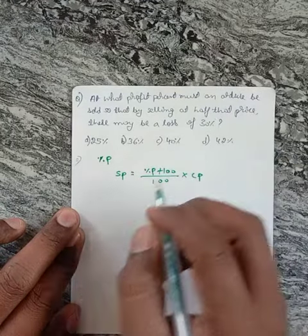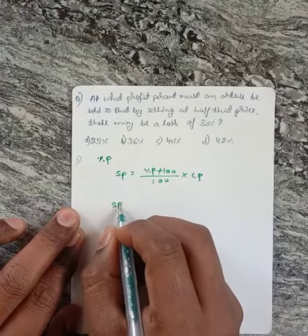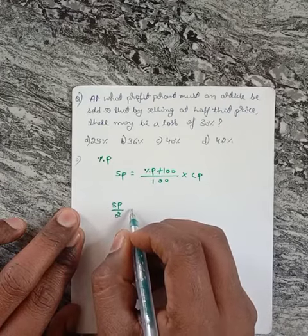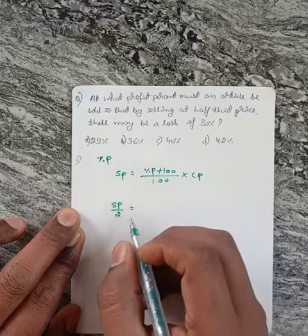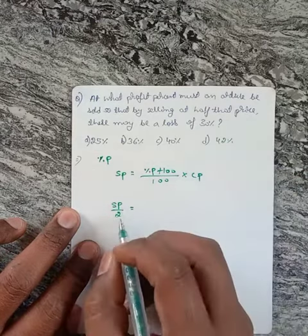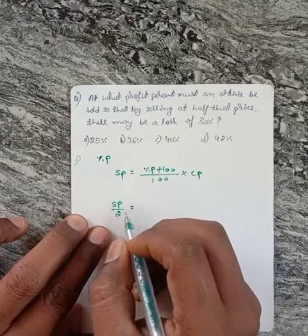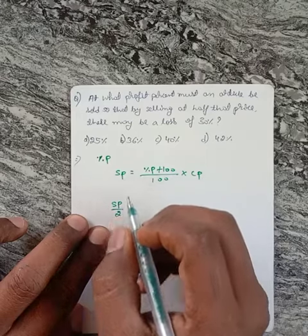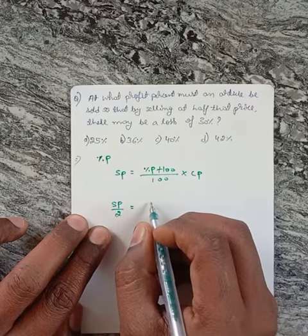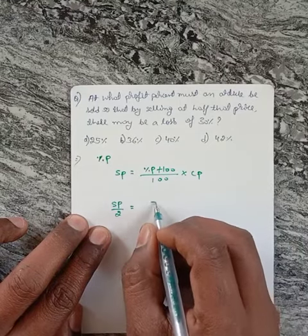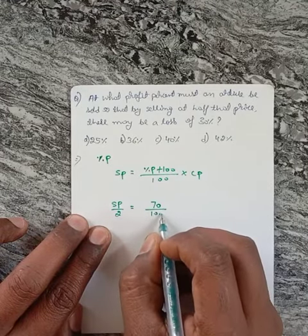Now they have mentioned that half of the selling price - when we are selling that article by half of that selling price, then we have 30% loss, that is 70% of cost price.